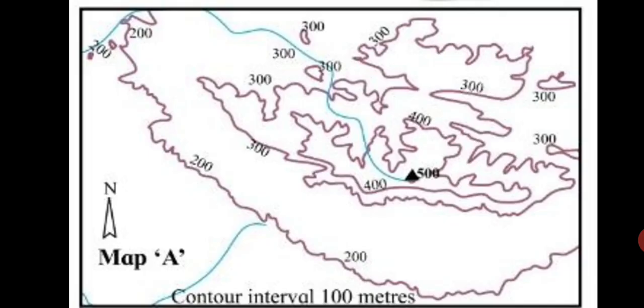Now, see map A. In the map, lines are drawn, each joining places of a specific height. This way, the relief of the land can be easily shown. It helps us to understand the slope of the land and the height of different places.